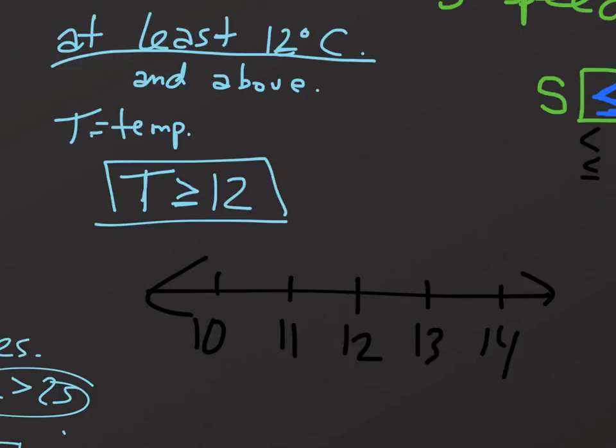I'm going to draw my circle at 12. And since our solution does include the number 12, it can be it, we'll draw a closed circle. And this time, our temperature has to be greater than or equal to 12. So, I'm going to be drawing an arrow going to the right, just like this. And that's it.